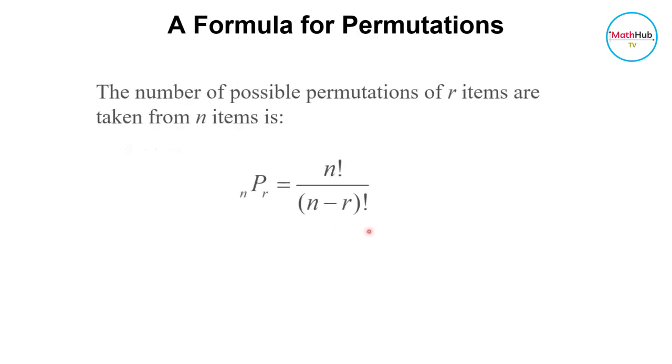So the formula here is the number of permutations of r items that are taken from n items. You could think of n here as the total number of a set and r is a subset of the bigger set. The permutation of r items taken from n items is equal to n factorial divided by n minus r factorial.